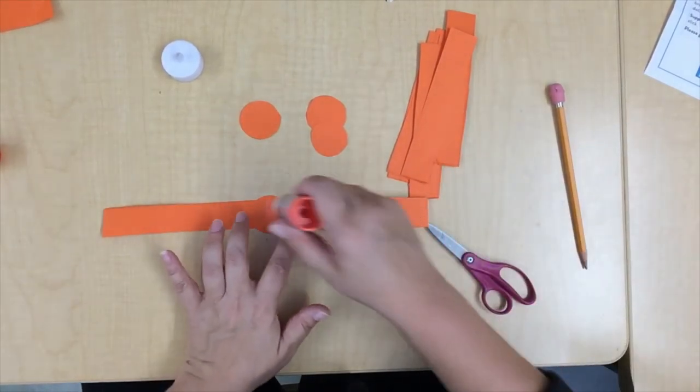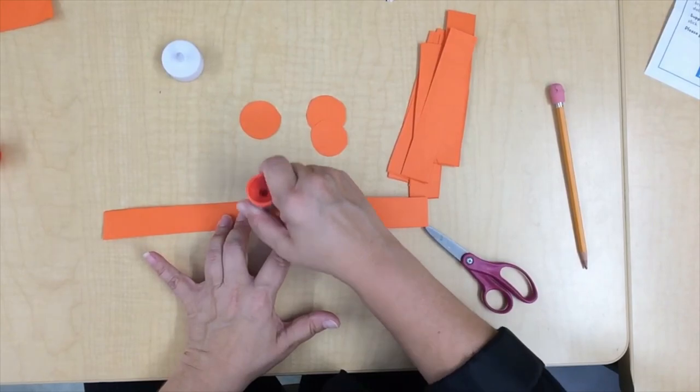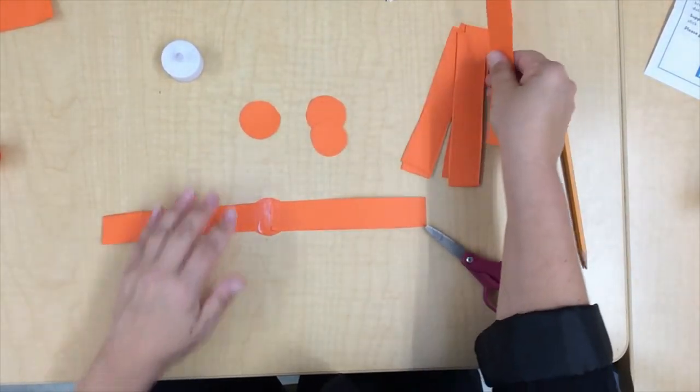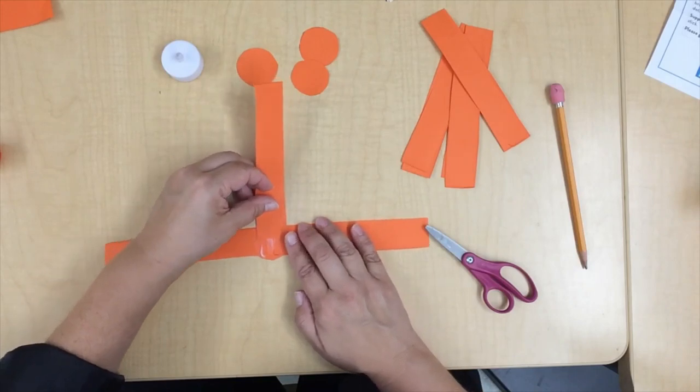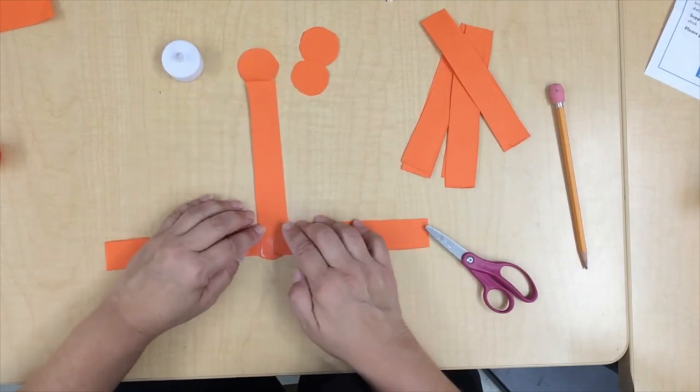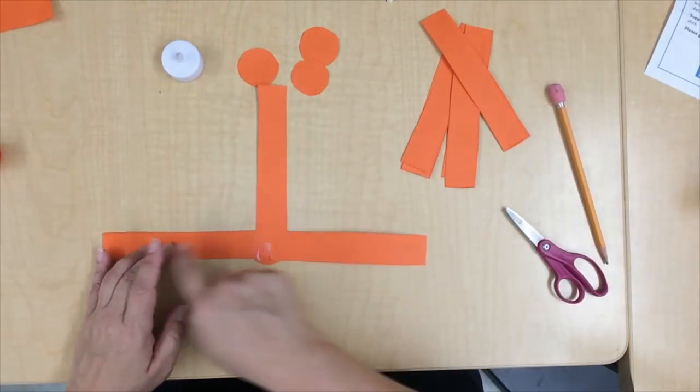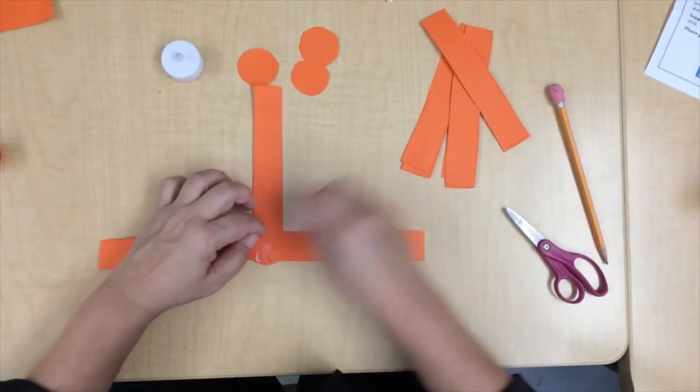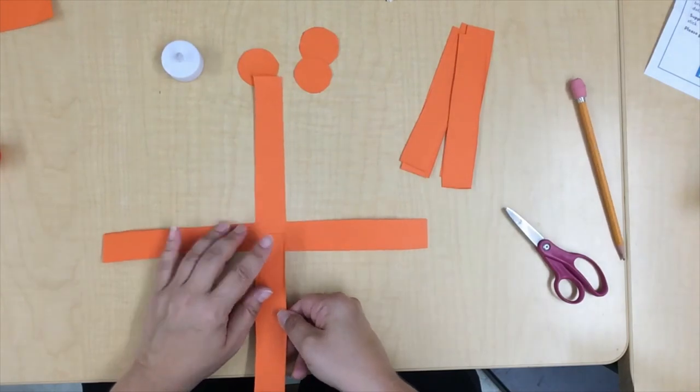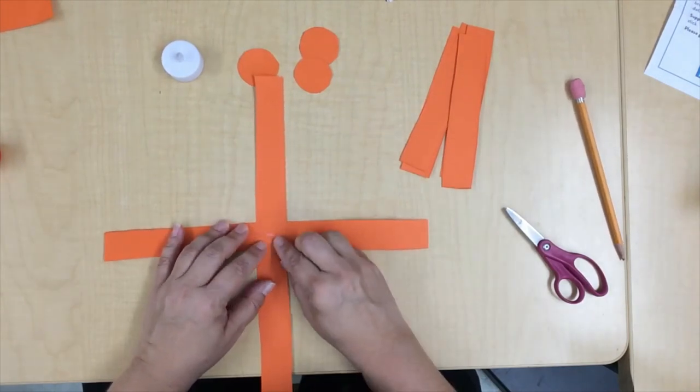Now put a little more glue on top of those strips. Put another strip so that you now have like an upside down T, and now put the other one right across from there.